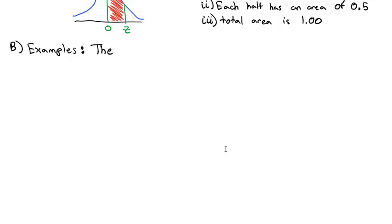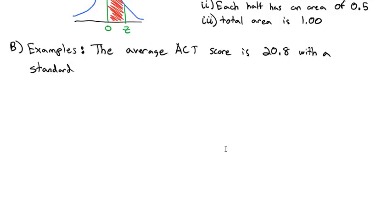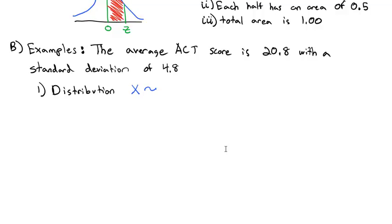For our examples, according to Google, the average ACT score is 20.8 with a standard deviation of 4.8. Let's describe the distribution: our variable x is normally distributed with a mean of 20.8 and a standard deviation of 4.8.